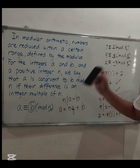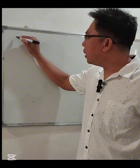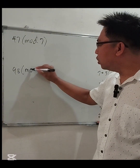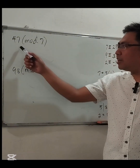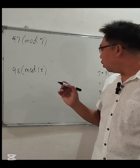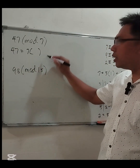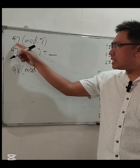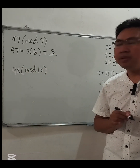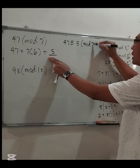Now let's calculate 47 modulo 7 and 98 modulo 15 — meaning, find the remainder. To solve this, we divide and find the remainder. Using the division algorithm: 47 = 7 × 6 + 5, since 7 × 6 = 42 and the remainder is 5. Therefore, 47 is congruent to 5 modulo 7.